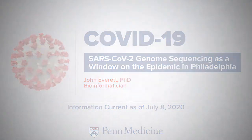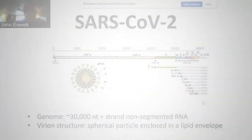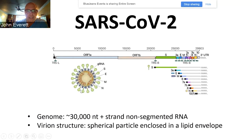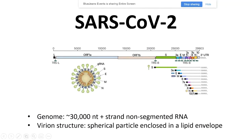As many of you already know, SARS-CoV-2 is a positive strand, non-segmented RNA genome. It's approximately 30,000 nucleotides. It's a spherical particle enclosed in a lipid envelope. And if you look at the schematic up here, you see all these little green blobs around the periphery — these are the spike proteins. They're involved in mediating the fusion of the viral membrane to the host cellular membrane. I'll talk about these in a moment.